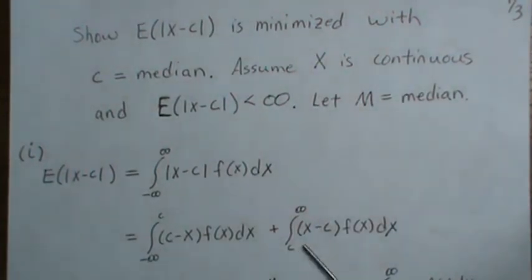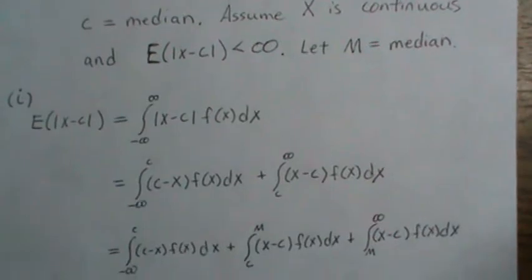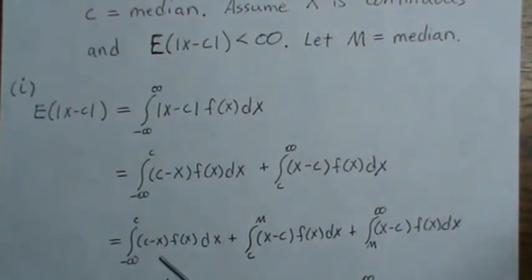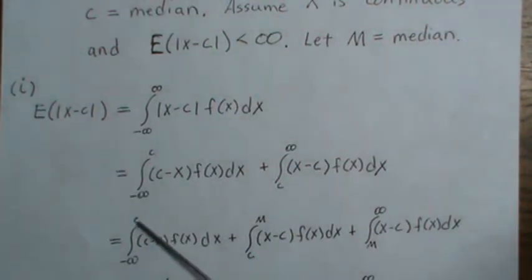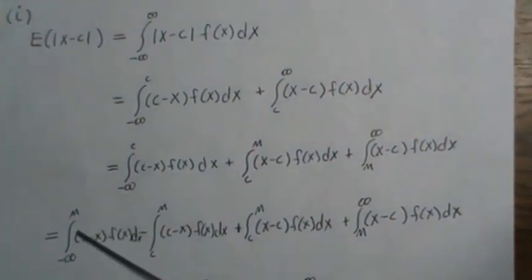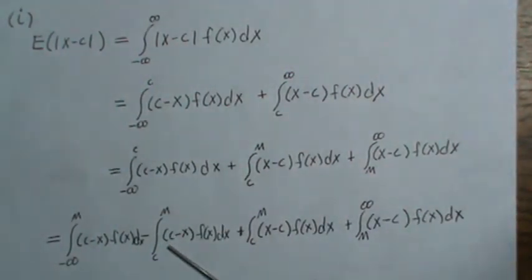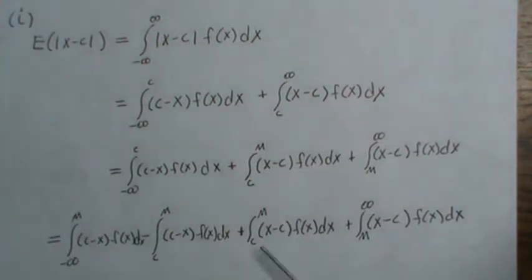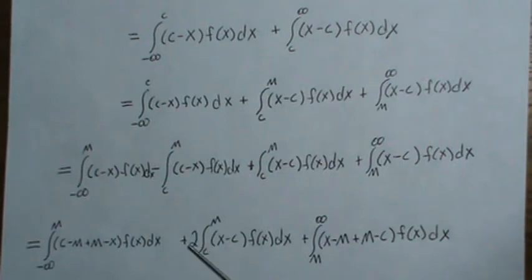We take this interval. Instead of going from c to infinity, we go c to m and then m to infinity. We keep the first integral the same and split the second into two. Over here, we extend to m — going from negative infinity to m — which means we have to subtract out the interval from c to m. So this comes down, and we go from negative infinity to m but we went farther, so we subtract it back out. This integral, we distribute the negative in and get x minus c. We can combine those and just put a coefficient of 2 in front.